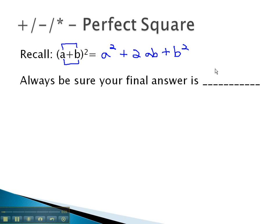It is important to note we don't simply square both terms, but we also have the important middle term, twice the product. We also must always be sure our final answer, as always, is reduced.